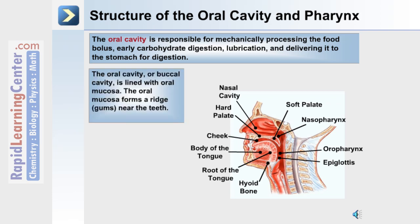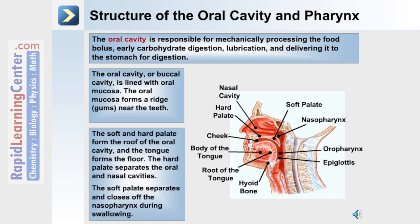The oral cavity is also known as the buccal cavity. It's lined with oral mucosa, and this forms a ridge which are the gums near the teeth. The soft and hard palate form the roof of the oral cavity. The tongue forms the floor of the oral cavity. The hard palate separates the oral and nasal cavities from each other. The soft palate separates and closes off the nasopharynx region during swallowing.